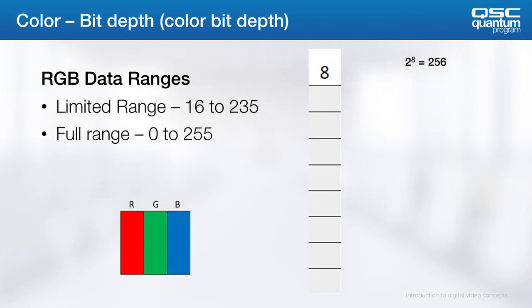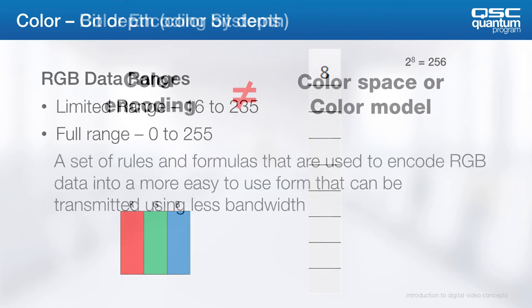The complete range is called full range color, and 16 to 235 is called limited range color. Typically, SMPTE-CE rates support a limited color range, and IT/VESA rates support a full color range.